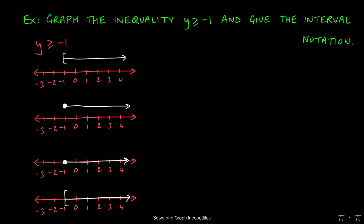Now to confirm that we've drawn our arrow going in the right direction, we can choose a test point. So let's say we choose 0. If we were to plug 0 into y is greater than or equal to negative 1, we would just get 0 is greater than or equal to negative 1. And that is a true statement.